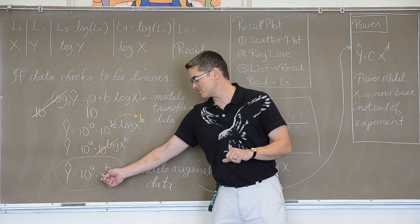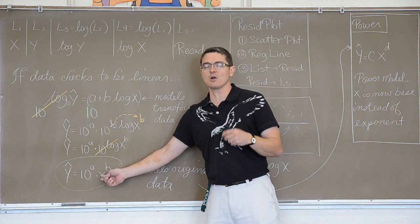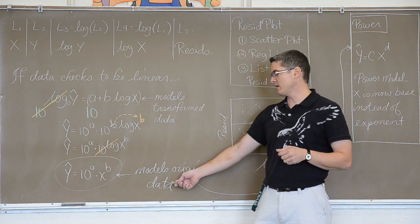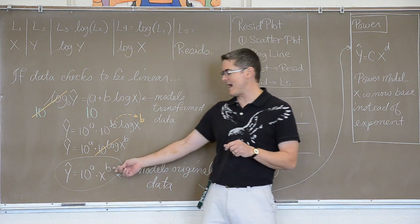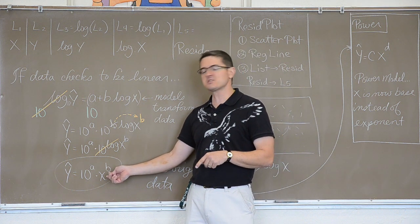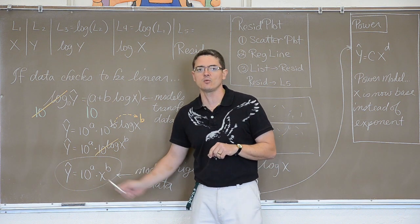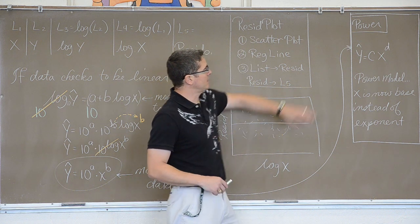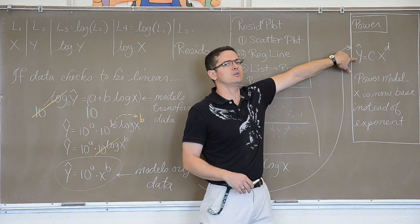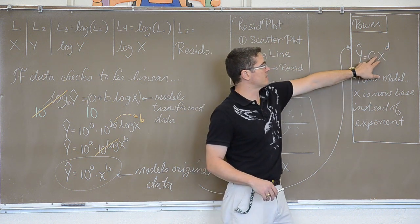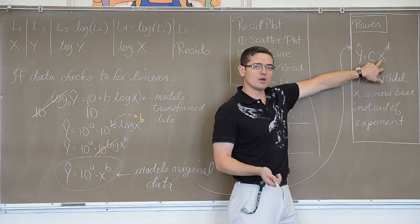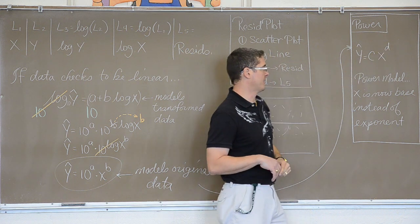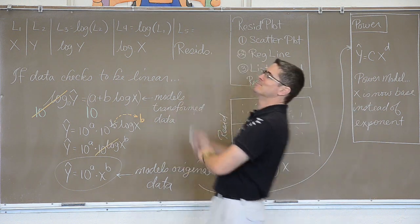See how the base is x? Our base is now our variable x, unlike the exponential functions where x was in the exponent. This is modeling our original data — the power model. So you can go back to the original graph, the original list 1 and list 2, put this into y sub 1, and it should follow that original curved data fairly well. Residual plots will check for linearity and you will be seeing a calculator lab about that shortly. This is possibly what the power model will look like in your textbook — it might use different variables. You have got an initial value c times a base which is your variable, and the exponent is now fixed, unlike the exponential model where the exponent was changing and the base was fixed. And that is the power model. That is the end of my lecture.